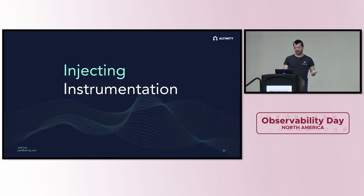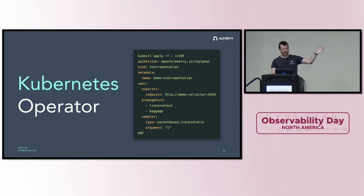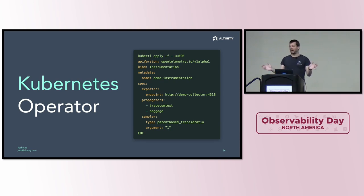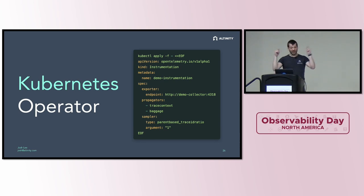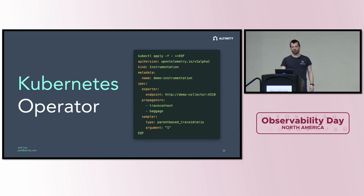We can inject instrumentation with the Kubernetes operator. Here's a quick example of how to do this — though it might be a bit out of date. Yesterday at Cloud Native Rejects, Rhys and Adriana gave a great talk going in-depth on how to use the OpenTelemetry operator to do auto-instrumentation, and the recording is up on YouTube — I'd definitely recommend checking it out.